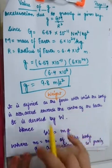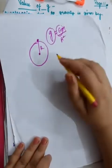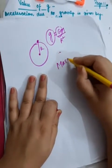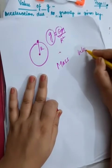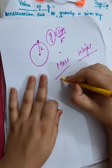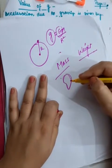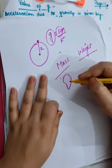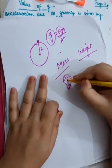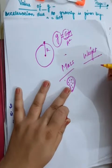This is the discussion about small g, which is acceleration due to gravity. Now let's discuss what is weight. There are two things you need to be very clear about: mass and weight — they are different. Mass is different from weight. Mass means the amount of substance contained in the matter.